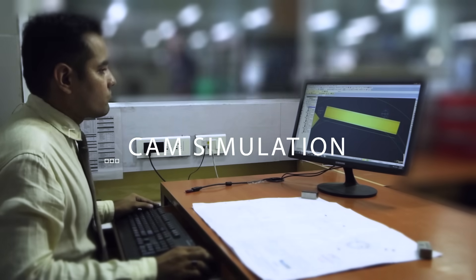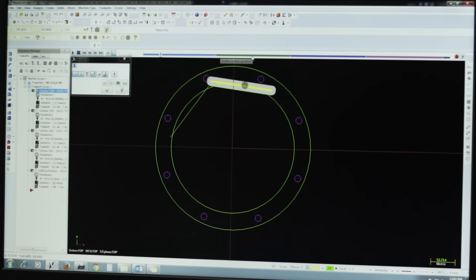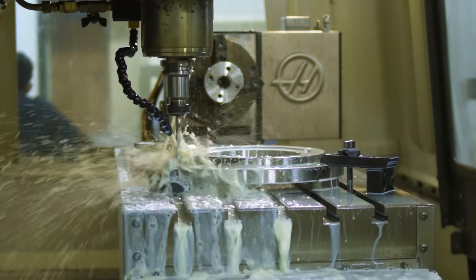To avoid human error in CNC programming, CAM software is used to prepare the program and the same is then simulated to check for accuracy and sustainability before being transferred to the machine interface for actual use.